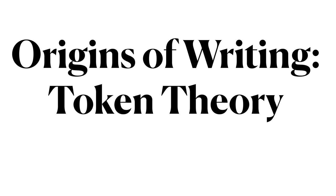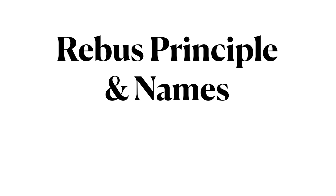This is Ling 270, Language, Technology, and Society. We will now continue our examination on the origins of writing, looking at how writing came to be as an early language technology by examining the token theory of the origin of writing. In a few moments, we will cover the Rebus Principle and how it came to be used to create a technique for writing names.